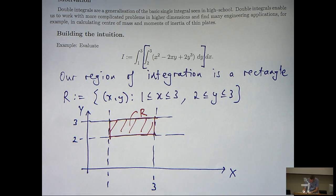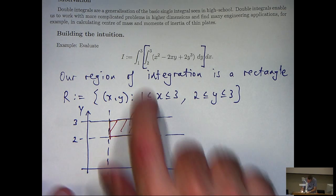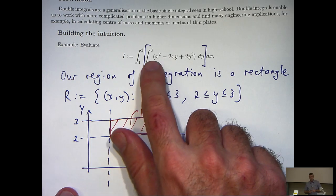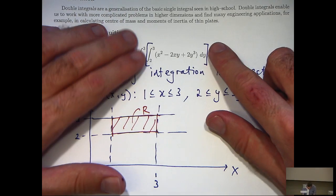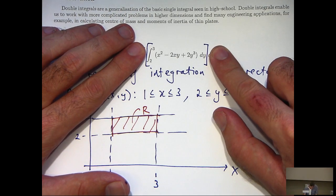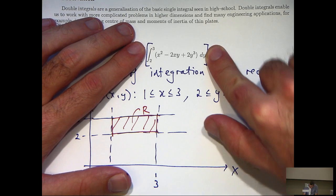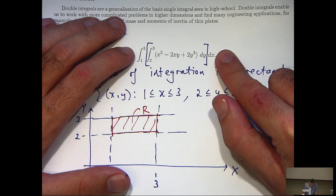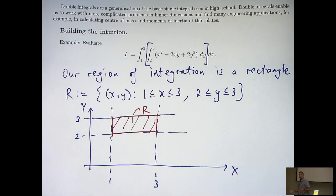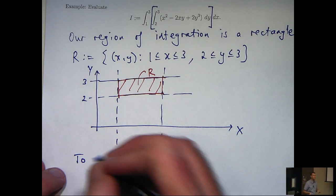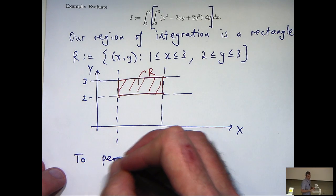So how do we actually perform the double integral? Well, a good general rule is to try to consider the inside integral first and just integrate with respect to y, holding x fixed. And then after you've done that, move to the outside integral and integrate everything with respect to x.